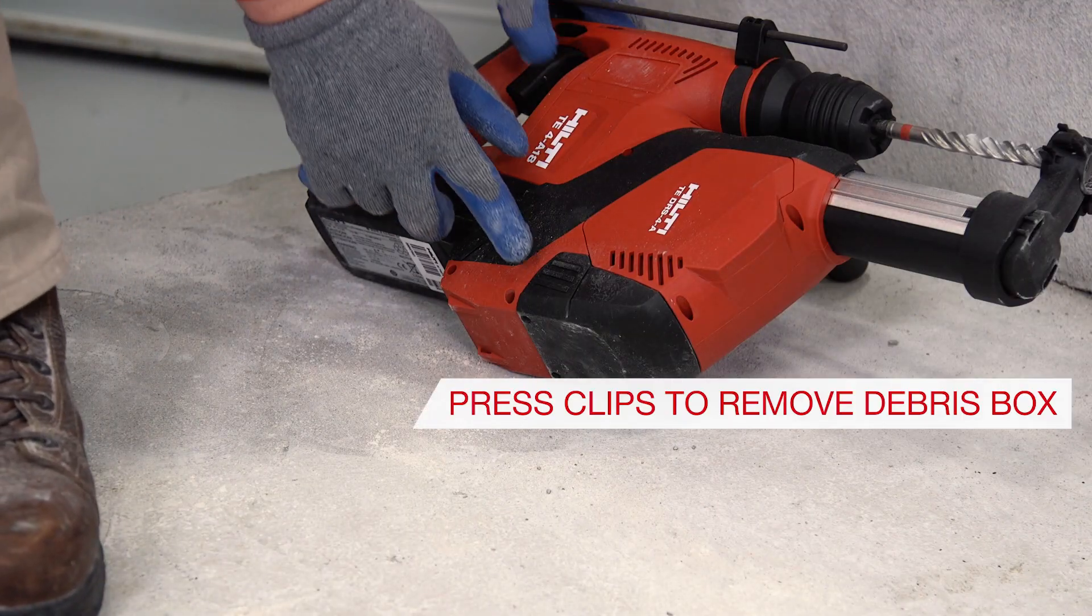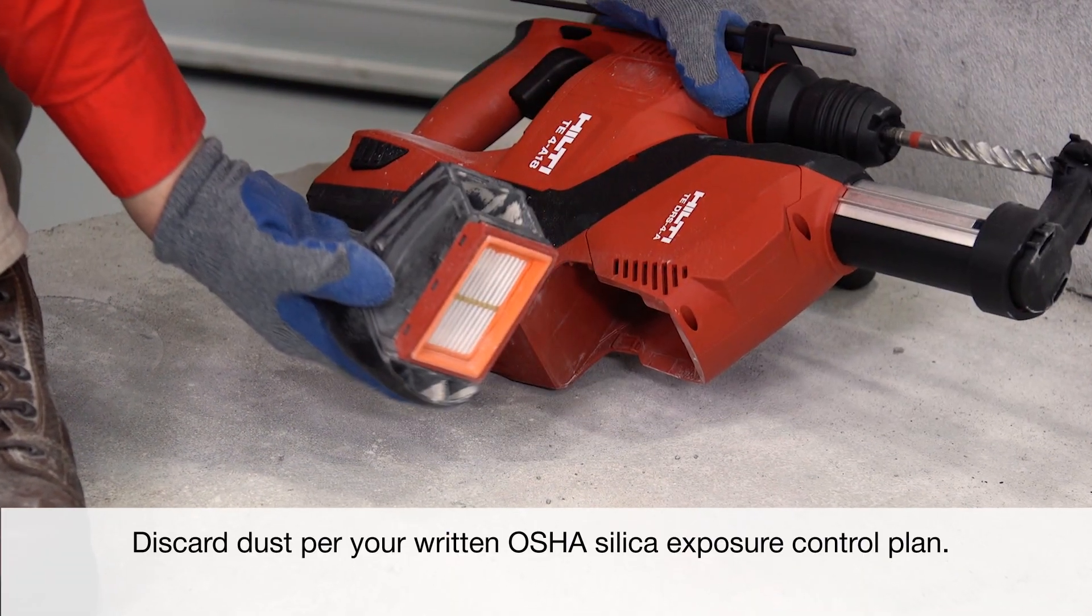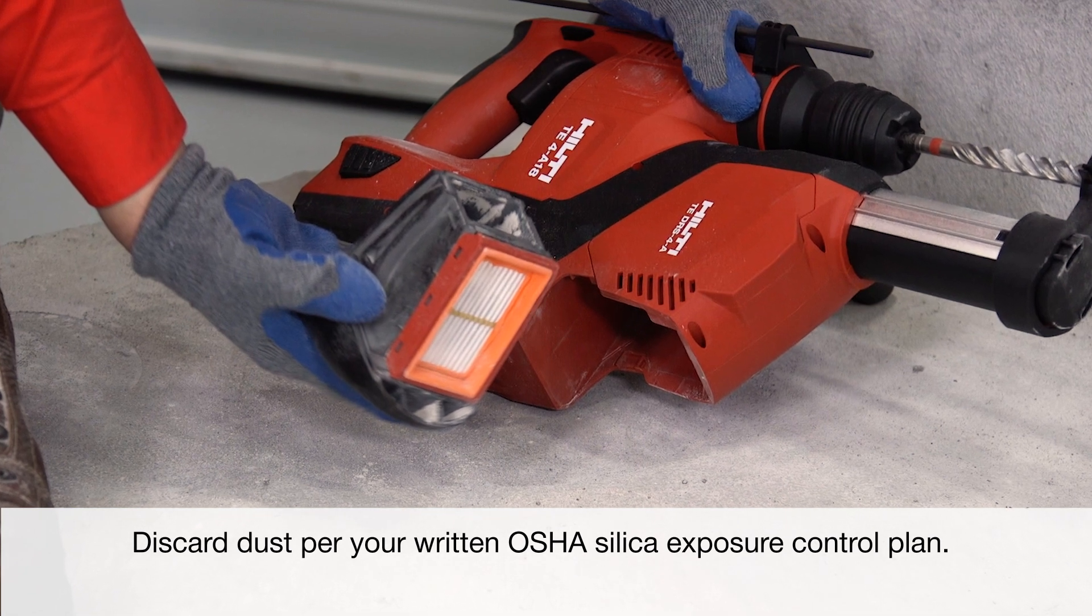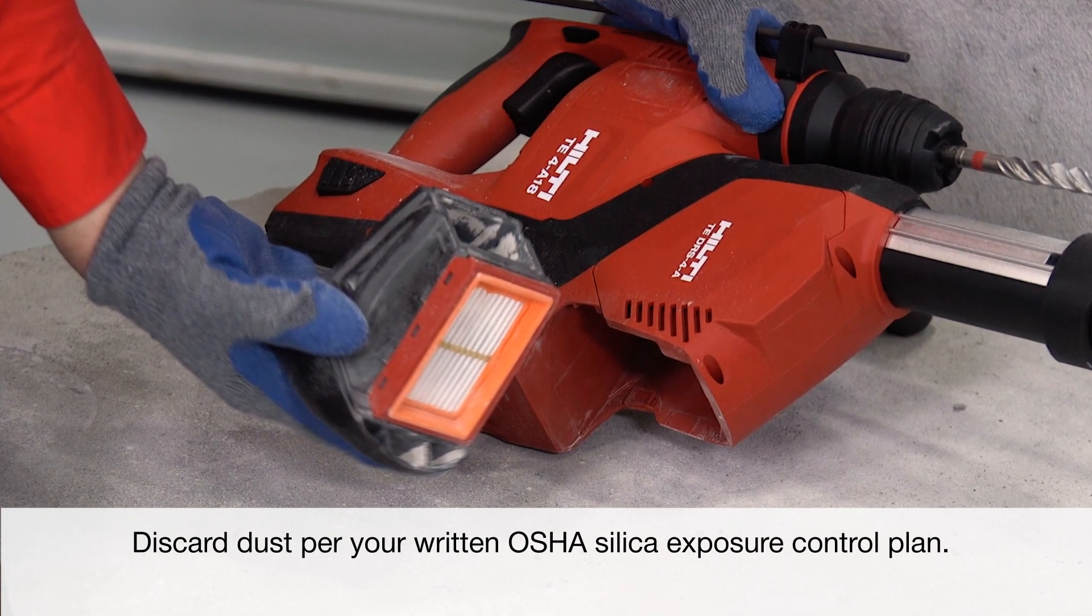To remove the debris box, simply use the clips at the side of the box and discard per your company's written exposure control plan. We recommend doing this every 8 to 10 holes at 5 eighths inch by 2 inch embedment.